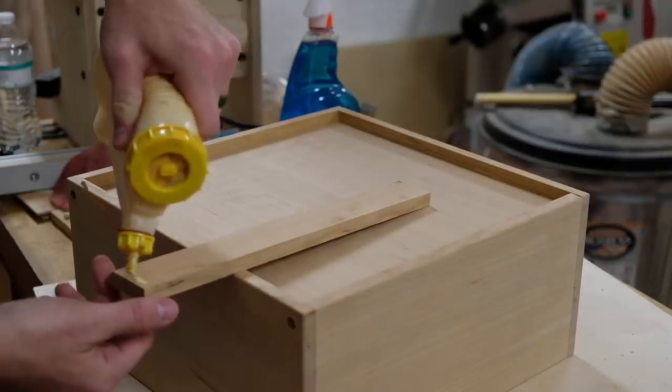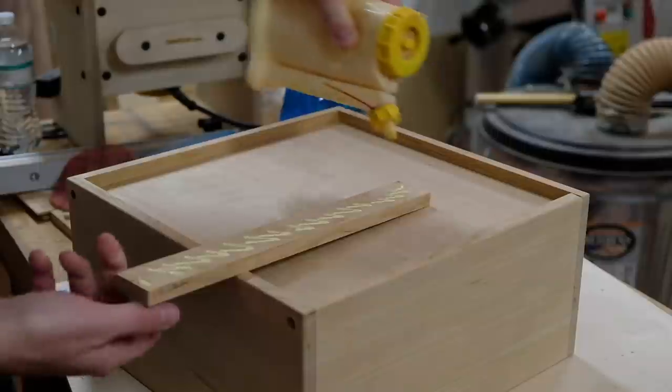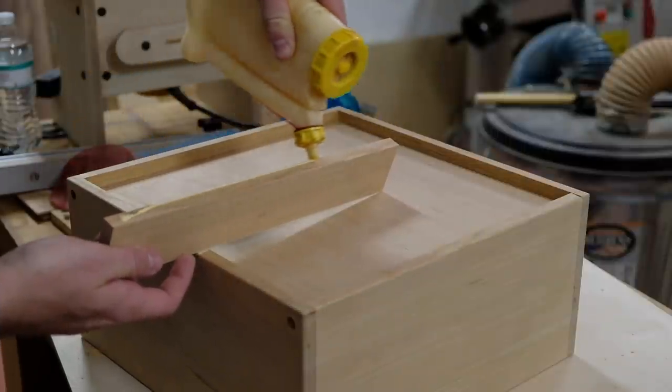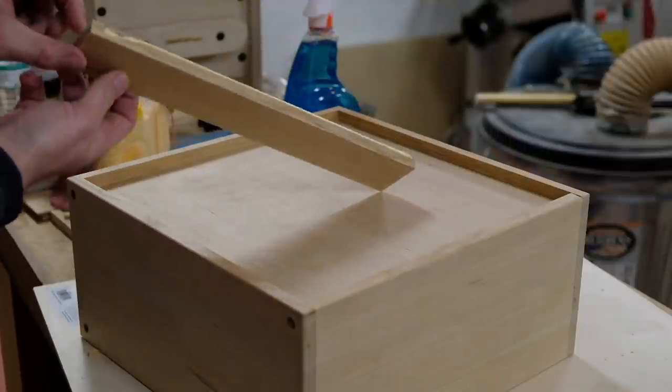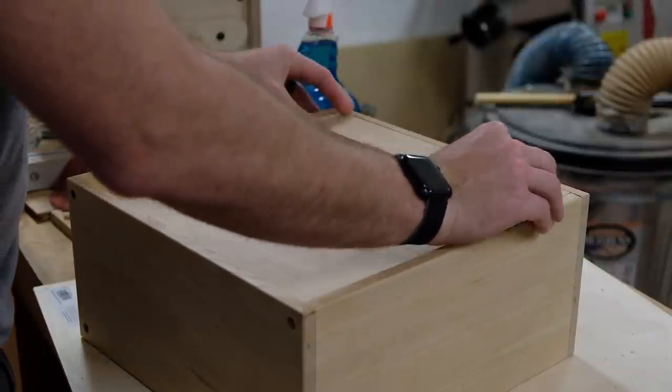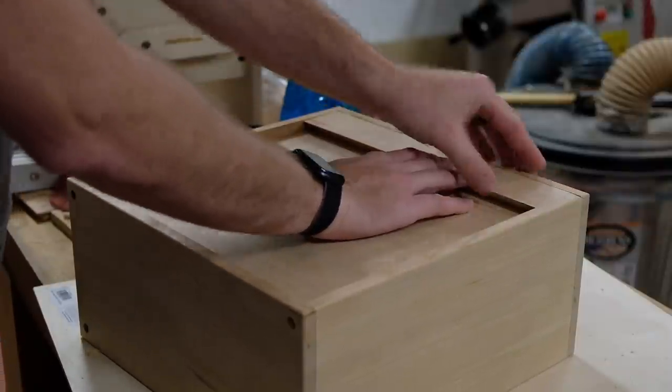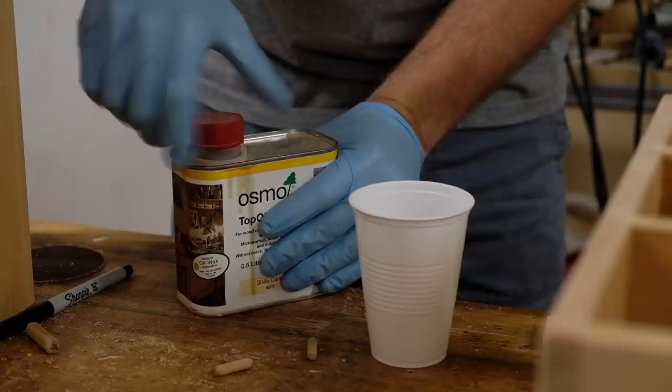The back panel is inset a half inch specifically to allow for this French cleat to exist. Half of the cleat is attached to the back panel here, while the other half will be attached to the wall. With the cleat inset, the chest will sit flush with the wall as opposed to jutting out.